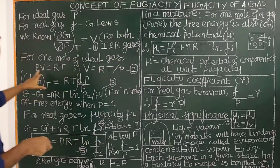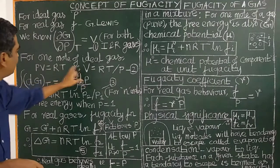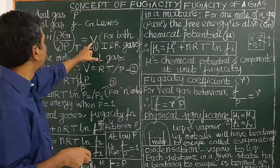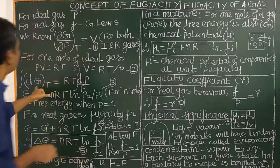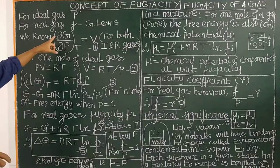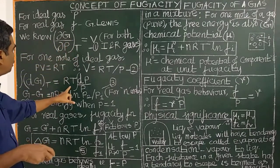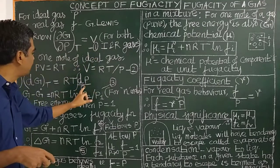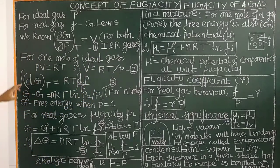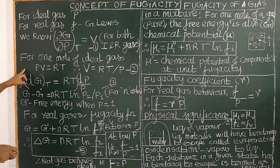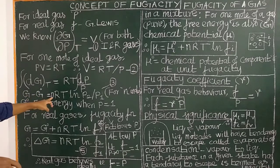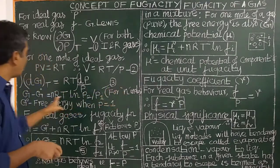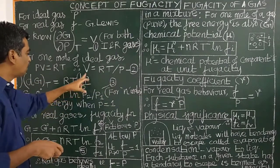For one mole of ideal gas, PV = RT, so V = RT/P. Substituting: dG at constant temperature equals RT · d(ln P), which is RT/P · dP. On integrating this equation, you get G minus G° equal to RT · ln P for one mole of ideal gas.